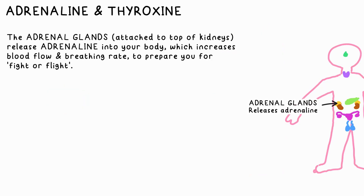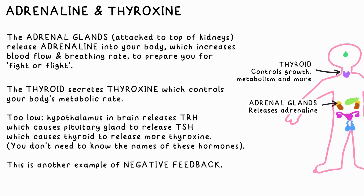Adrenaline is the hormone that increases heart and breathing rate in stressful situations to prepare the body for fight or flight. Thyroxine is secreted by the thyroid and controls metabolic rate.